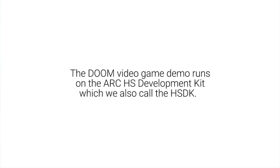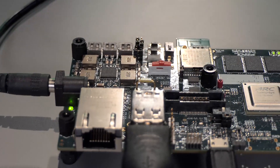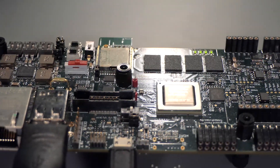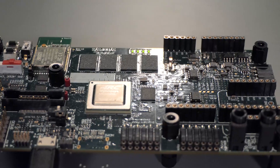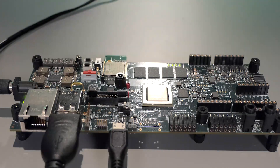The DOOM video game demo runs on the ARC-HS development kit, which we also call the HSDK. The HSDK is a pre-verified hardware and software platform used for developing software for ARC-HS processor-based systems. The board supports the HS3X processors and a full range of peripherals, including USB, Wi-Fi, Ethernet, I2C, and more.